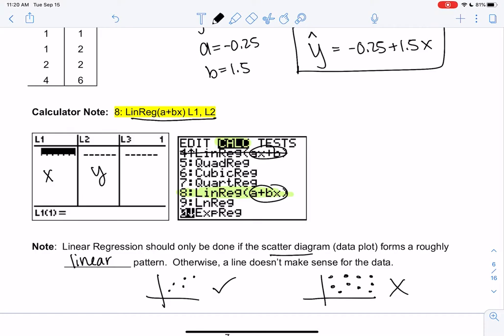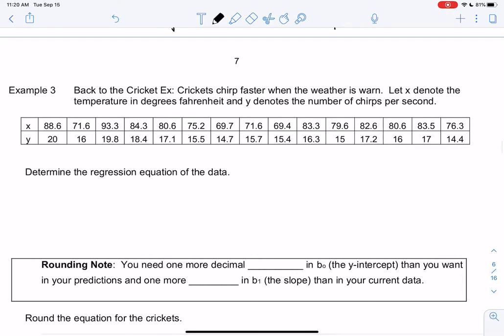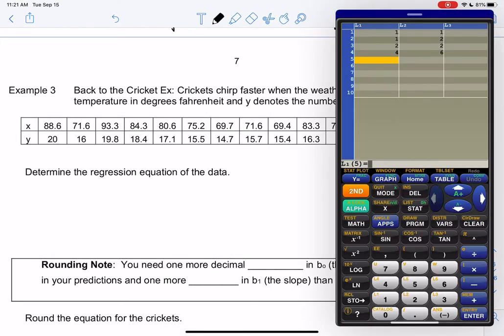Let me know if you have calculator issues before you keep going. Otherwise, let's go back to that cricket example. We talked about how crickets chirp faster when the weather is warm, and x was the degrees, and then y was the chirps. So let's go ahead and find the regression equation. We're going to go back to our calculator. This is going to take a while to type stat, edit. And I'm going to try to type as fast as possible.